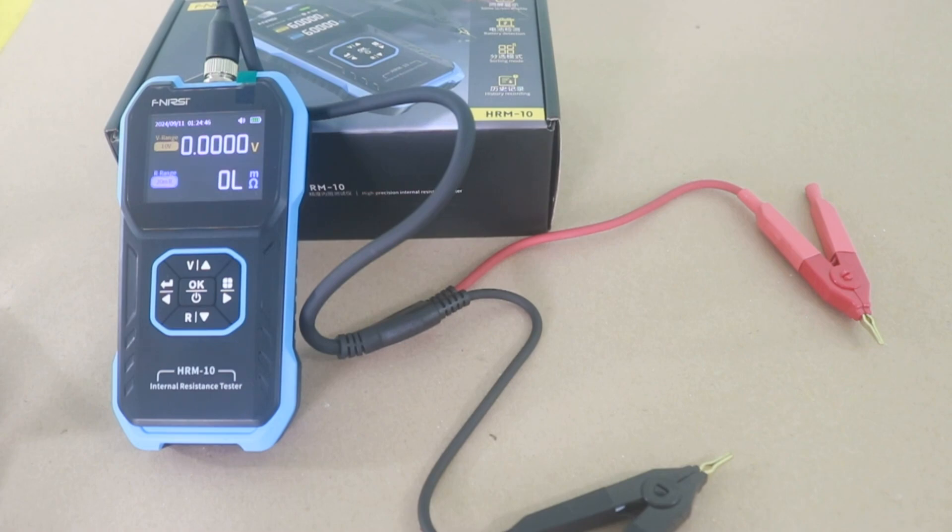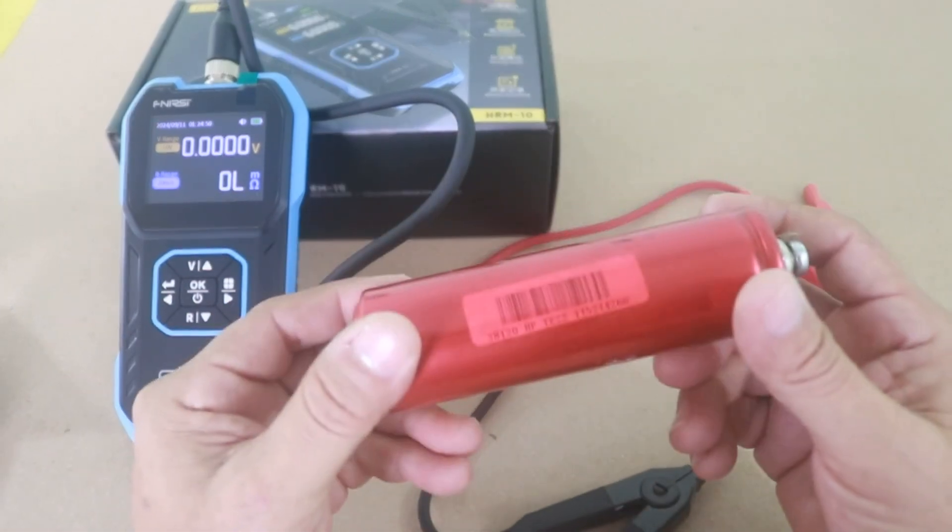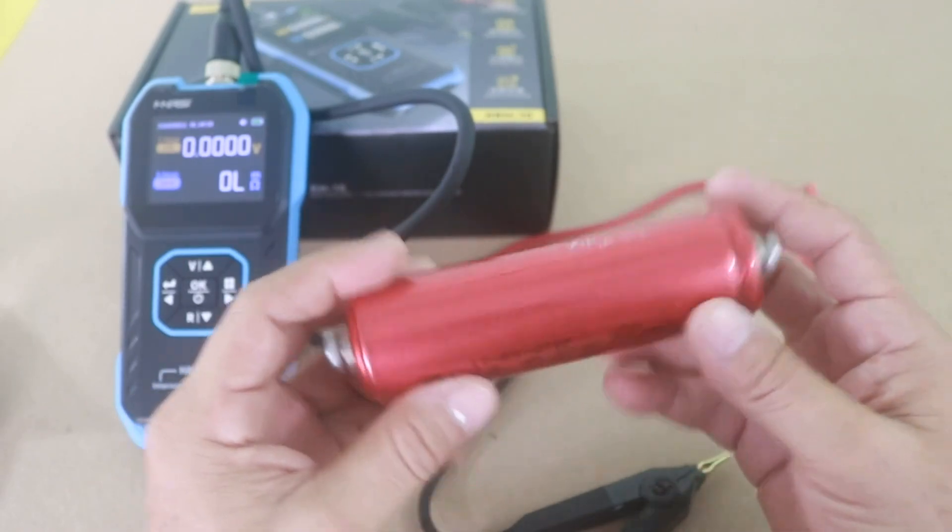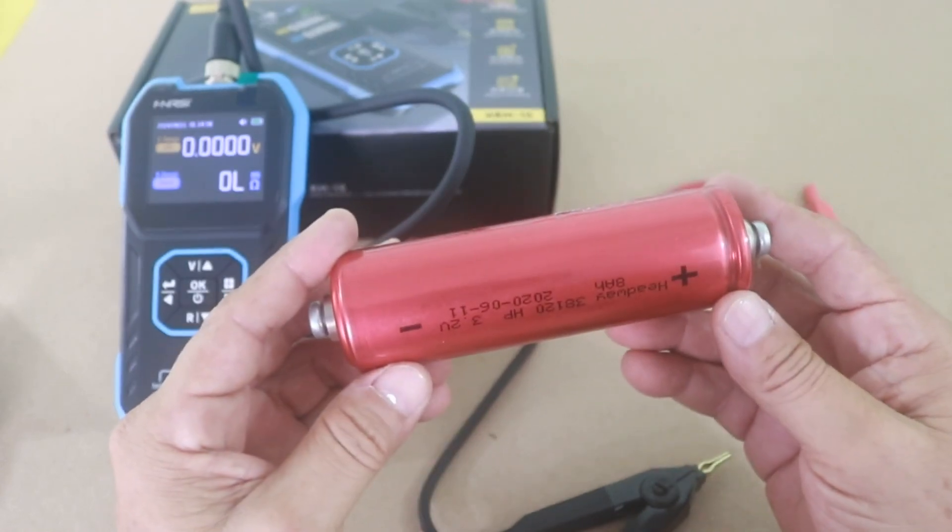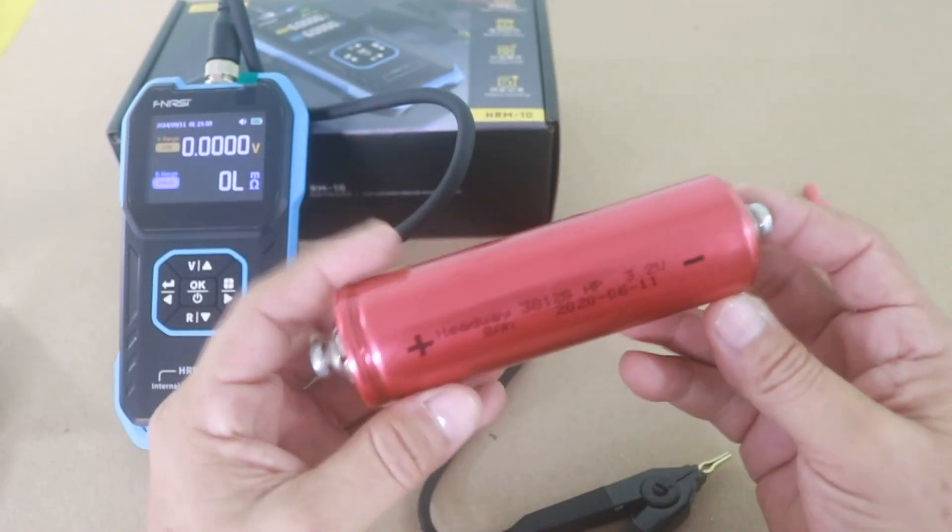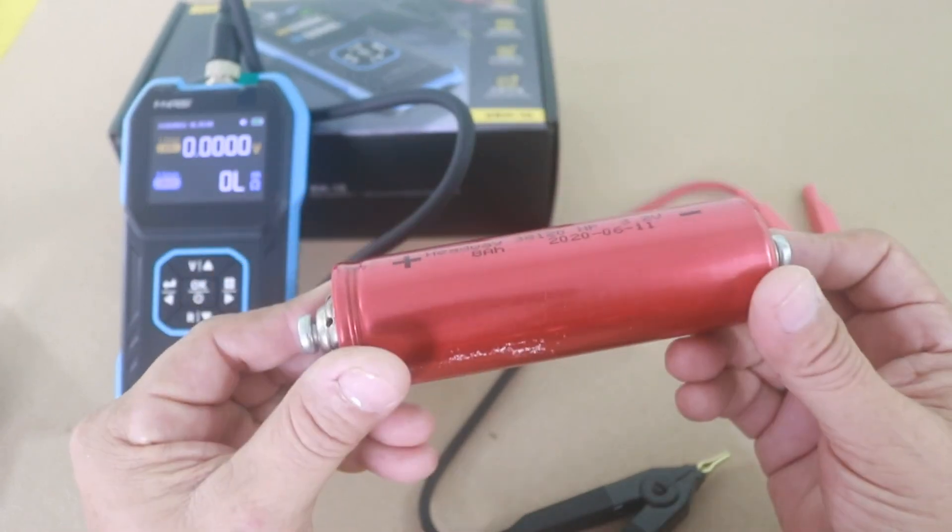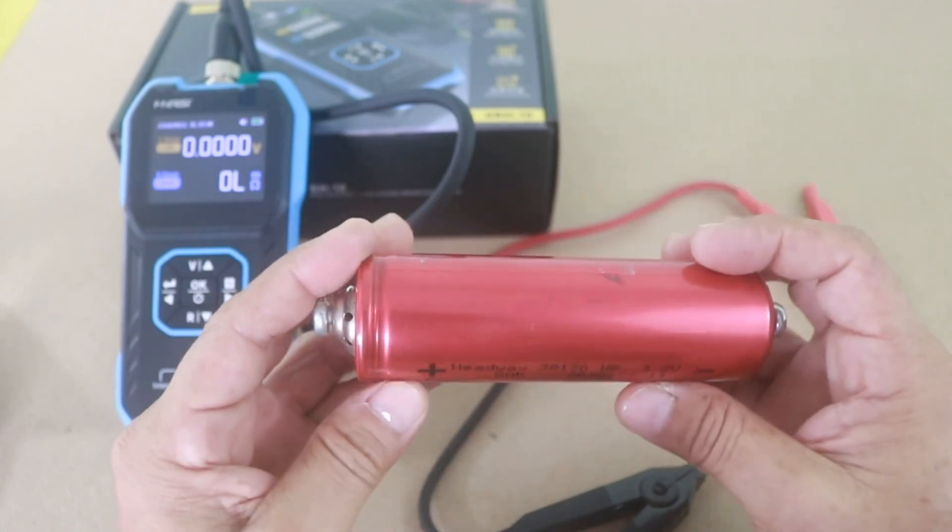Okay. Now I want to check another battery. This high capacity cell. It is also lithium. It is lithium iron phosphate. It is a different chemistry. This battery can give you up to 200 amps of current. It is very powerful. So let's check it.